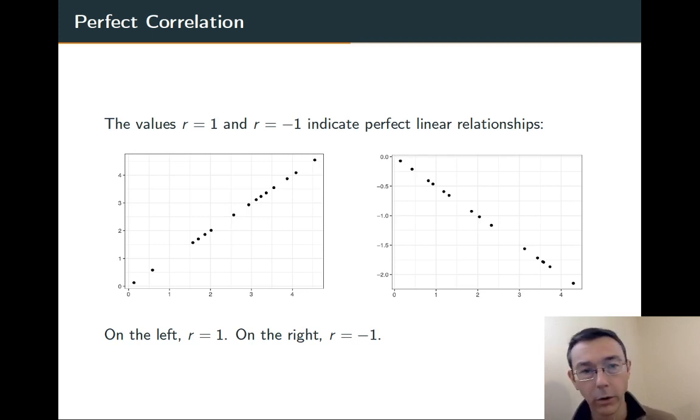Rather, you should think about the coefficient of correlation R as saying something about how spread out the data is from that line that we're imagining going through the center of the data.